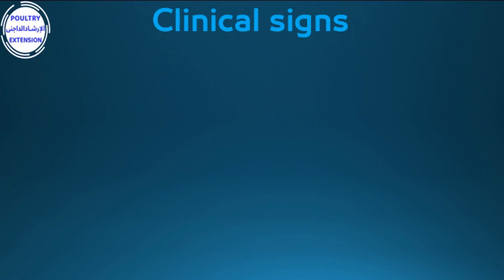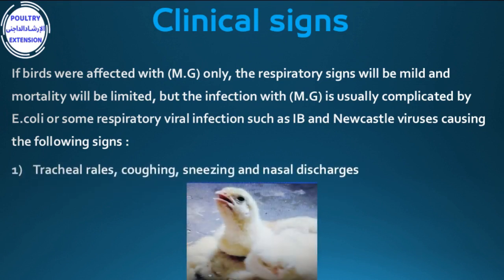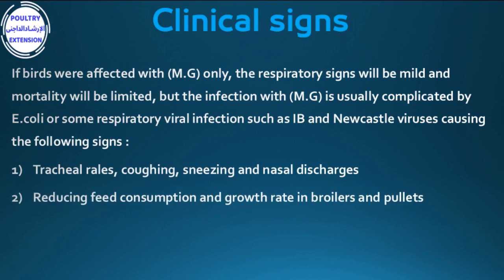Clinical signs: if birds are affected with Mycoplasma gallisepticum only, the respiratory signs will be mild and mortality will be limited. However, MG infection is usually complicated by E. coli or some respiratory viral infections, such as infectious bronchitis (IB) and Newcastle viruses, causing the following signs: tracheal rales, coughing, sneezing, and nasal discharge.